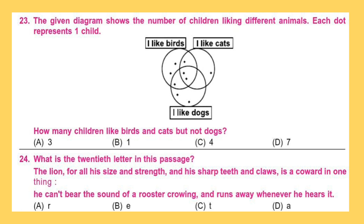Question 23. The given diagram shows the number of children liking different animals. Each dot represents one child. How many children like birds and cats, but not dogs?